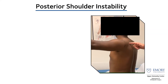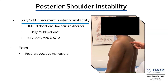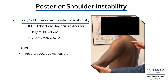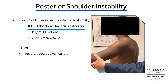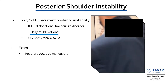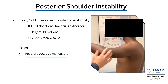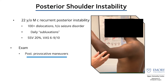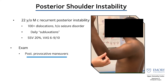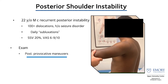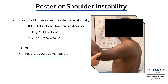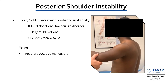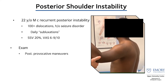Here's a 22-year-old gentleman with recurrent posterior shoulder instability — over 100 dislocations, a history of a seizure disorder, and daily subluxations. You can see how he and I are actively subluxing his shoulder in and out. I'm performing a posterior provocative maneuver, and you can see his shoulder subluxing in and out of the joint.